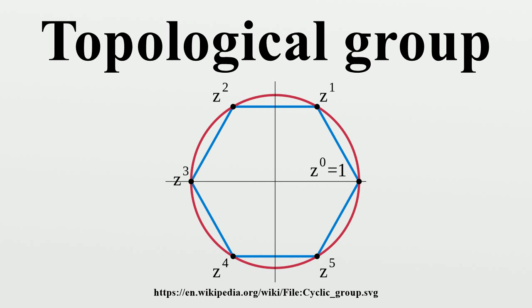In the language of category theory, topological groups can be defined concisely as group objects in the category of topological spaces, in the same way that ordinary groups are group objects in the category of sets.